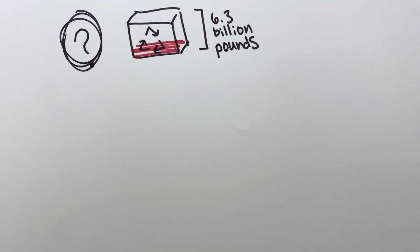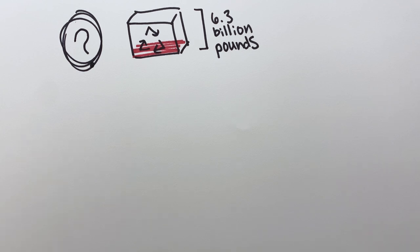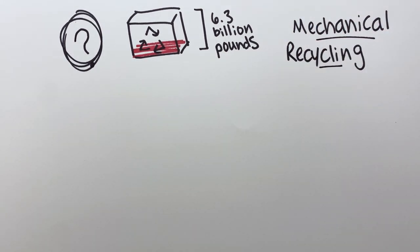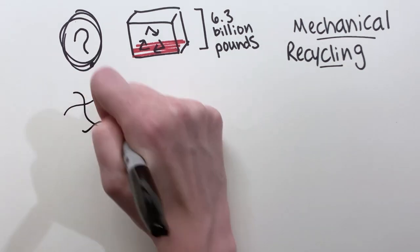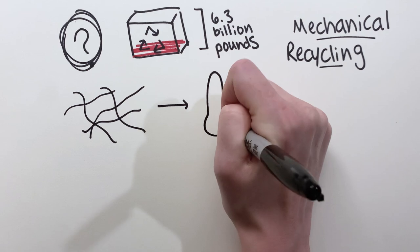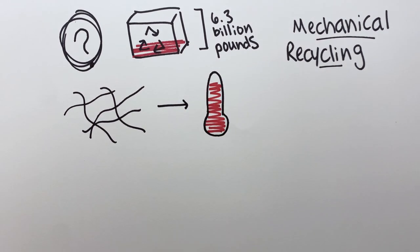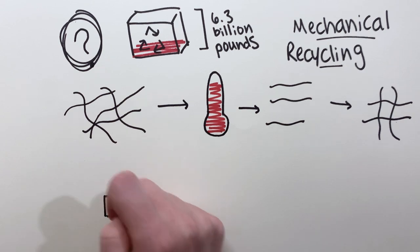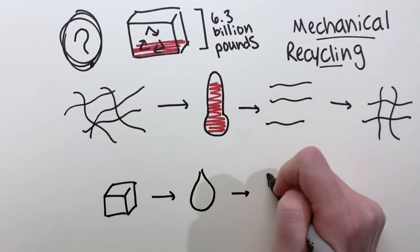But enzymes are not the method of choice. Not yet, anyway. Instead, the traditional process for recycling PET is mechanical recycling. Instead of breaking down the polymer chains into their building blocks, mechanical recycling relies on heating up the polymer so the chains can move around. Then, the chains can be reshaped into a new material, sort of like if you melt an ice cube then freeze it again into a new shape.